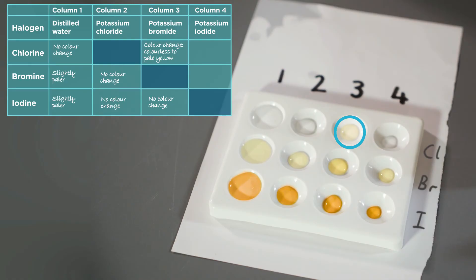The resulting pale yellow colour indicates that bromine has been produced, which means that a displacement reaction has taken place. Observe very carefully because sometimes the change is very slight. Here you can see a very slight yellow colour.